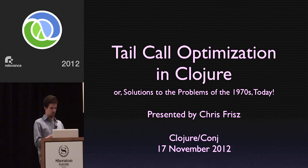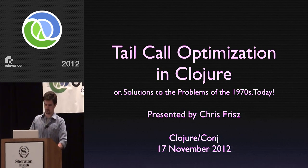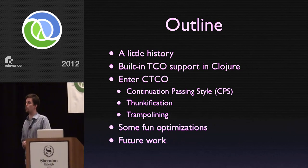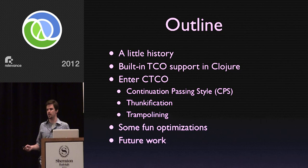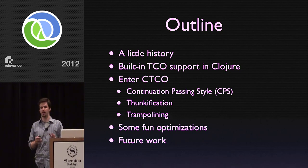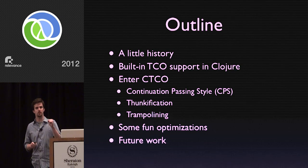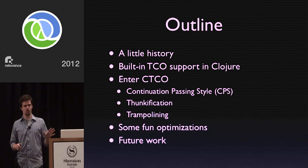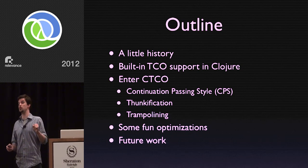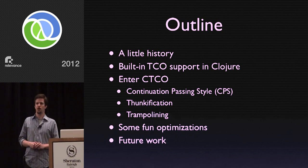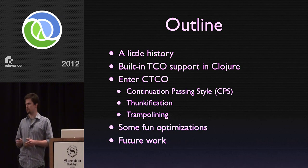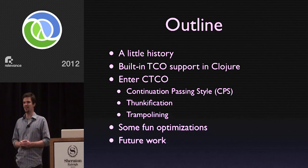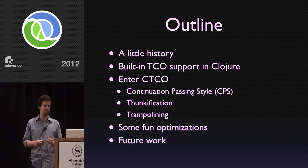Here's a little outline of what we're going to talk about today. We're going to talk about the history of tail call optimization and the ideas behind constant space tail calls. We're going to talk about the built-in tail call optimization support that Closure has — it's got just a little bit. And then we'll talk about the system that I wrote, which I very creatively named Closure TCO, and I call it CTCO. We're going to spend the bulk of the time talking about the transformations it does: continuation passing style, thunkification, and trampolining.